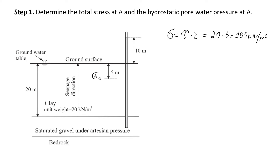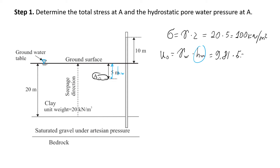Now let's estimate the hydrostatic pressure at point A — I'll write it as u with zero. In this case, just imagine if there is no additional upward seepage and no gravel layer. The pore pressure is the unit weight of water times the height of water above point A. Since we have the ground water level at the same level as the ground surface, we still have five meters of hw. So u₀ = 9.81 × 5, which gives us approximately 49.1 kN/m².